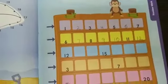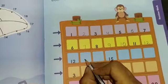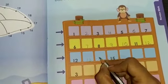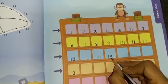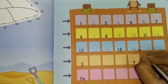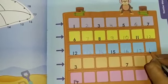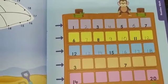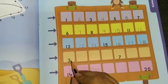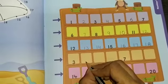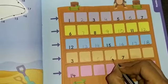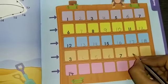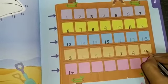Now after 12 which number will come? 13, 14, 15, 16, 17, 18. Now here the number is written 3. After 3 which number will come? 4, 5, 6, 7, 8, 9.